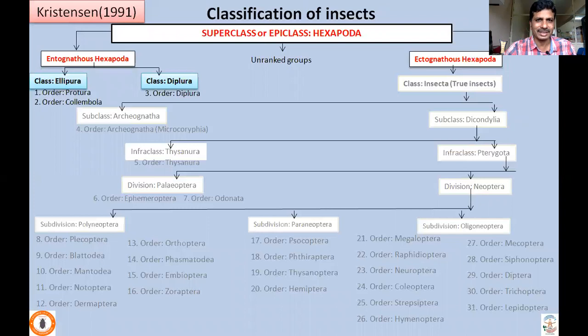That is the intention. The superclass or epiclass Hexapoda consists of two unranked groups: Entognatha hexapoda and Ectognatha hexapoda. Entognatha hexapoda consists of two classes — class Ellipura, which consists of orders Protura and Collembola, and class Diplura which consists of order Diplura. In this class, I'll be covering the distinguishing characters of these three orders.